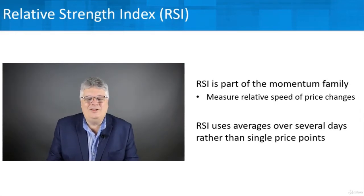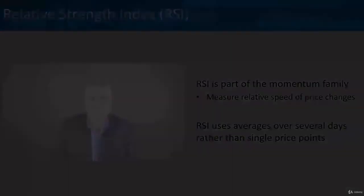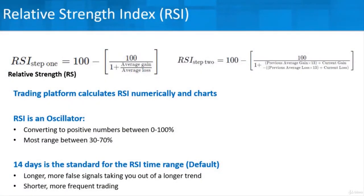For those who love math, you don't have to calculate this — the trading platform will automatically put it in nice lines and charts. But if you're wondering, there's a step one and step two to calculate the RSI, or relative strength index. One thing to take away from the math is that RSI is part of what's considered the oscillator subcategory. Basically, an oscillator converts numbers to a positive scale between 0 and 100%. Unlike rate of change, which has a zero line you can go below, with RSI there's nothing below zero — it's all positive numbers.